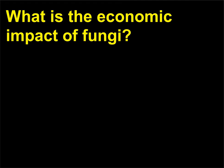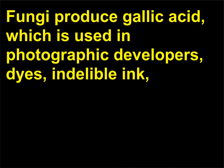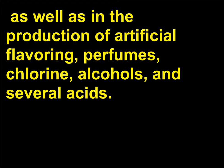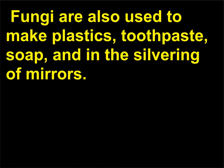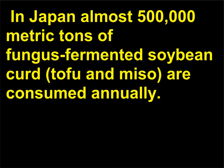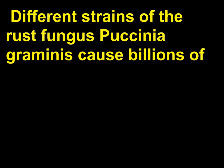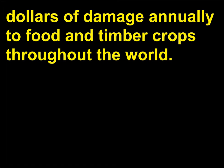What is the economic impact of fungi? Fungi produce gallic acid, which is used in photographic developers, dyes, and indelible ink, as well as in the production of artificial flavoring, perfumes, chlorine, alcohols, and several acids. Fungi are also used to make plastics, toothpaste, soap, and in the silvering of mirrors. In Japan, almost 500,000 metric tons of fungus-fermented soybean curd—tofu and miso—are consumed annually. Different strains of the rust fungus Puccinia graminis cause billions of dollars of damage annually to food and timber crops throughout the world.